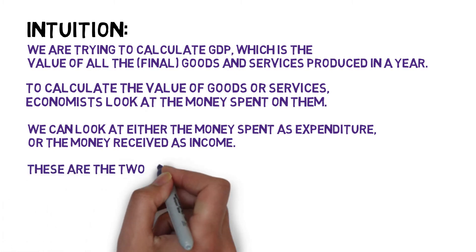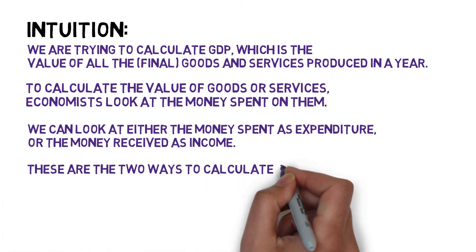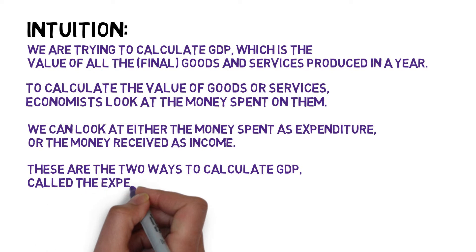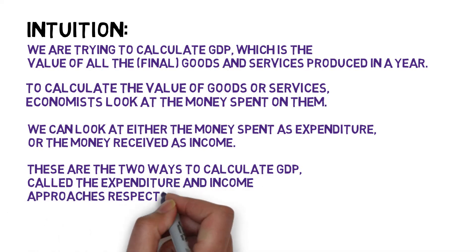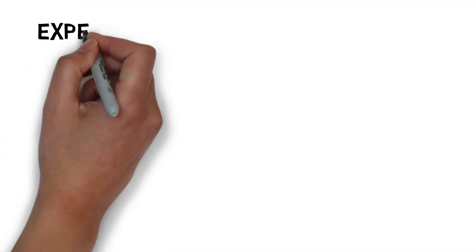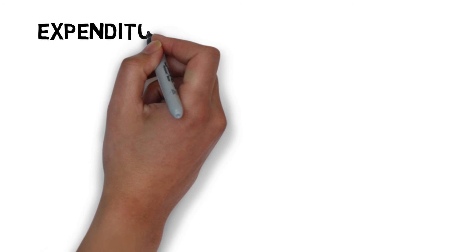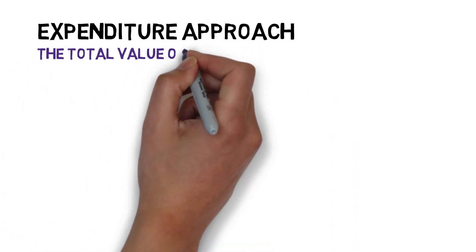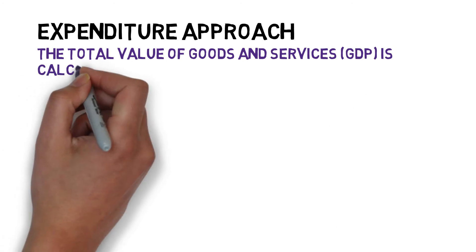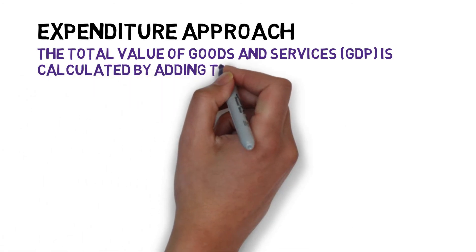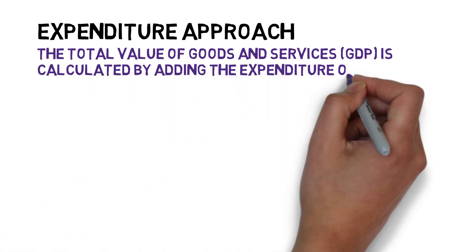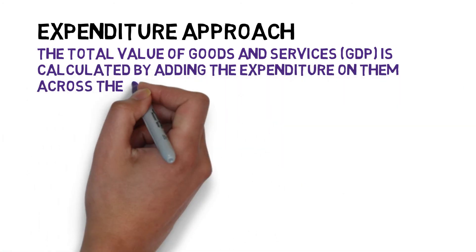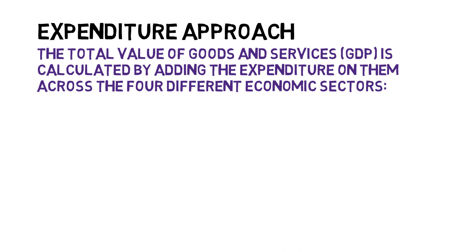In fact, those are the two ways to calculate GDP, called the expenditure and income approaches respectively. In this video, however, we're going to talk about the expenditure approach in particular. In the expenditure approach, the total value of goods and services is calculated by adding the expenditure on them across the four different economic sectors.